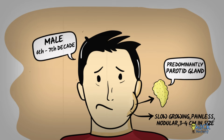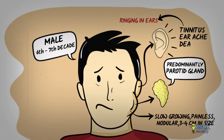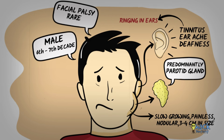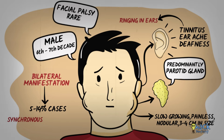Alternatively, it may in some instances present with pain and even ear symptoms like tinnitus, earache, and deafness. Rarely, the lesion may cause facial nerve palsy, and such lesions may be clinically mistaken for malignancy. This tumour may also manifest bilaterally in around 5 to 14% of cases, affecting both parotid glands arising either simultaneously or in one gland after another at different times.